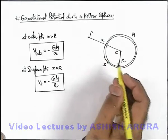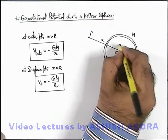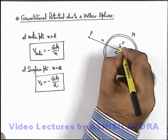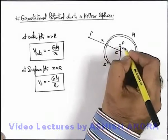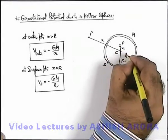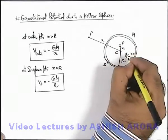But if we talk about any interior point, say this is an interior point P which is located at a distance x, we know well that inside the shell gravitational field is zero.